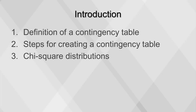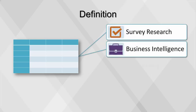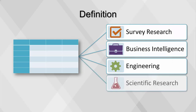This video will cover contingency tables—first, defining what a contingency table is, then the steps for creating one, and finally chi-square distributions. In statistics, a contingency table is a type of table in a matrix format that displays the multivariate frequency distribution of variables. Contingency tables are heavily used in survey research, business intelligence, engineering, and scientific research. They provide a basic picture of the interrelation between two or more variables and can help find interactions. A contingency table is also referred to as a two-way frequency table.